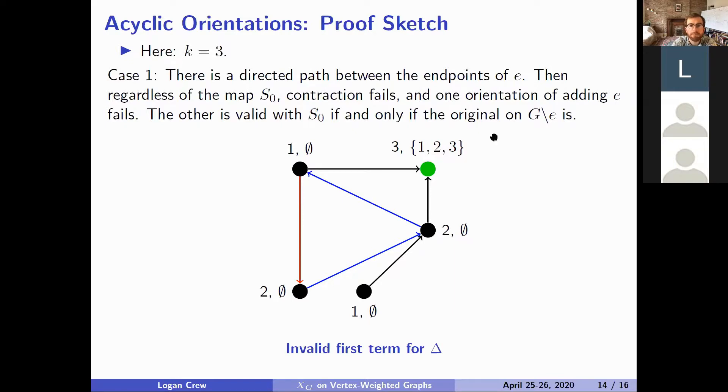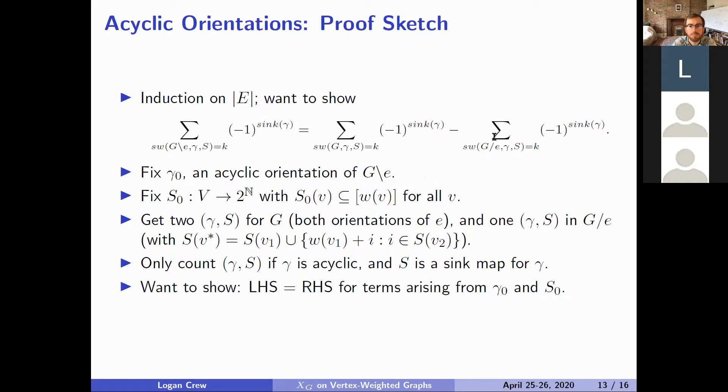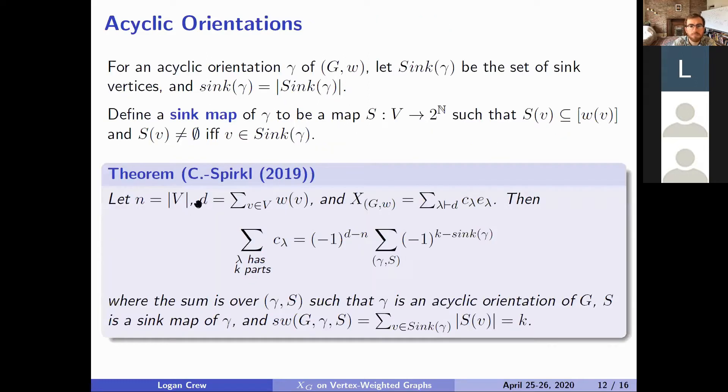And I'm seeing a question in the chat and I'll read the question briefly. So it's on here have you considered an analog of your theorem where the with length of lambda the number of parts of lambda? What exactly do you mean? Let me see. The sum is over the length over lambda has k parts so it is a sum over c_λ where k is the length of lambda I think I might not be understanding your question.